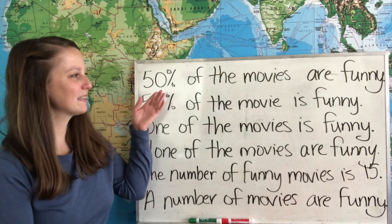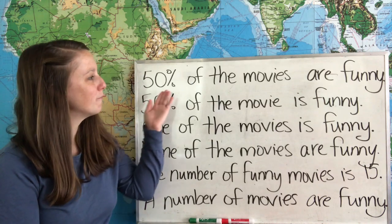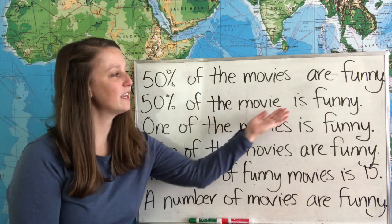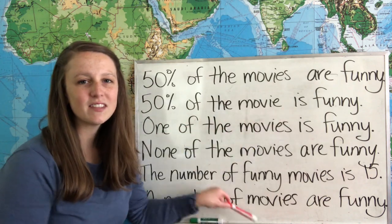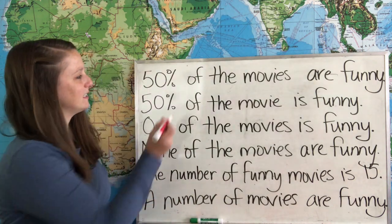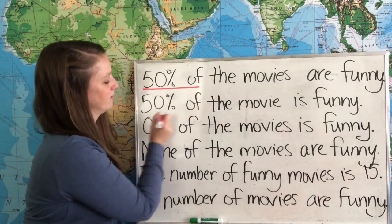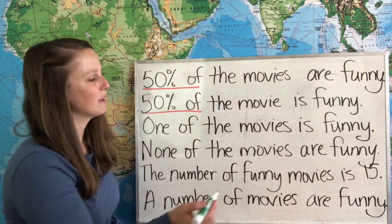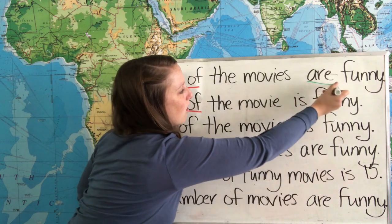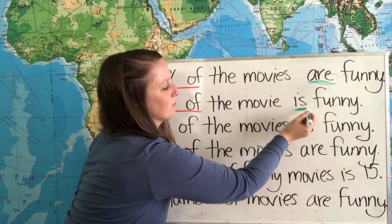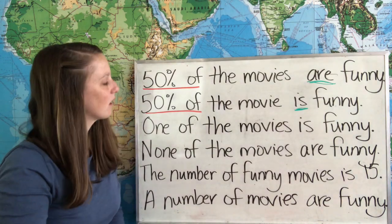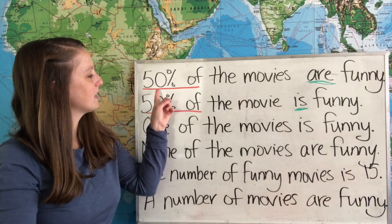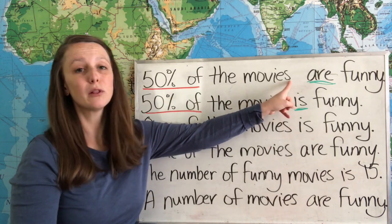Our first two examples are very similar to each other. 50% of the movies are funny and 50% of the movie is funny. Now we have the same expression of quantity here, 50% of, but we have a different verb. In the first one we have our plural are and in our second one we have the singular is. So why does this happen? In this case we're saying 50% of the movies, plural.